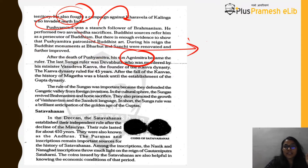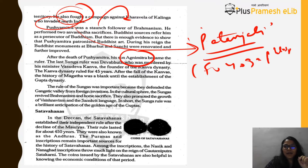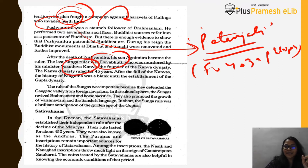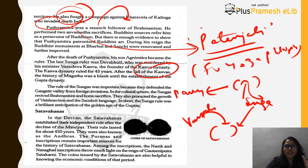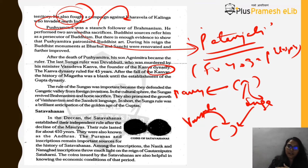After Pushyamitra's death, his son Agnimitra took over. The last Sunga ruler, Devabhuti, was murdered by his minister Vasudev Kanva, who then established the Kanva dynasty — just as the last Mauryan ruler was killed by Pushyamitra. The Kanva dynasty lasted only about 45 years. After the fall of the Kanvas, there was a gap of 100–200 years before the Gupta empire arose.